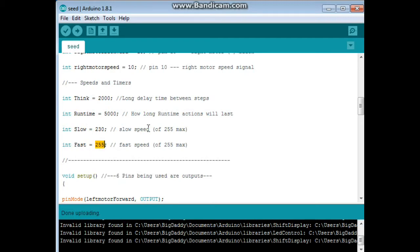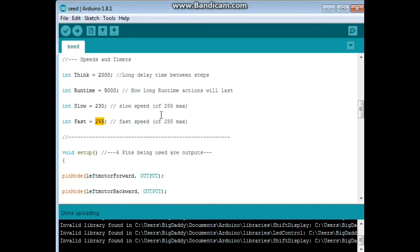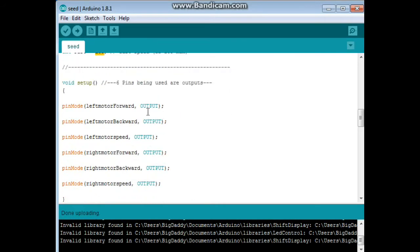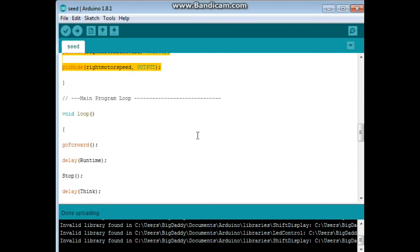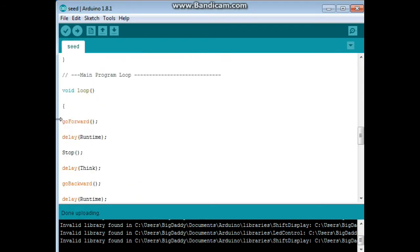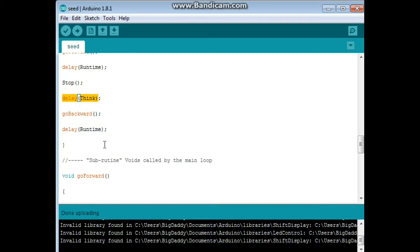Now, like I said, this is just a sample sketch that I'm using just to figure out how this shield works. We're going to get more in depth into the programming once I actually start writing the programming for it. So, we just turn all of our pins to output. And then in our main loop, we go forward, we wait, we stop, we wait, then we go backward.